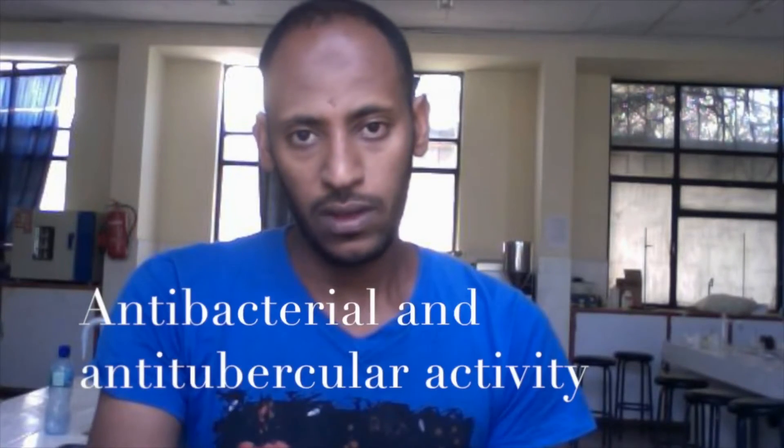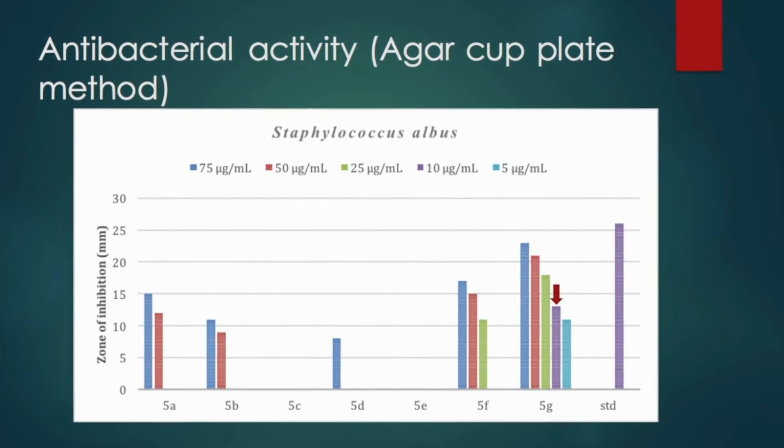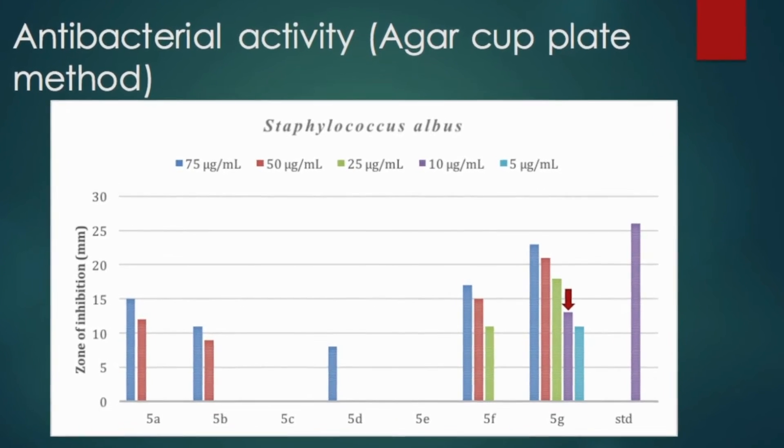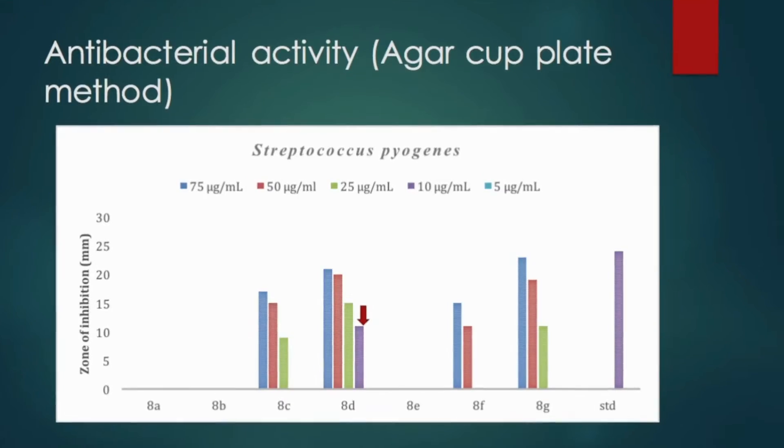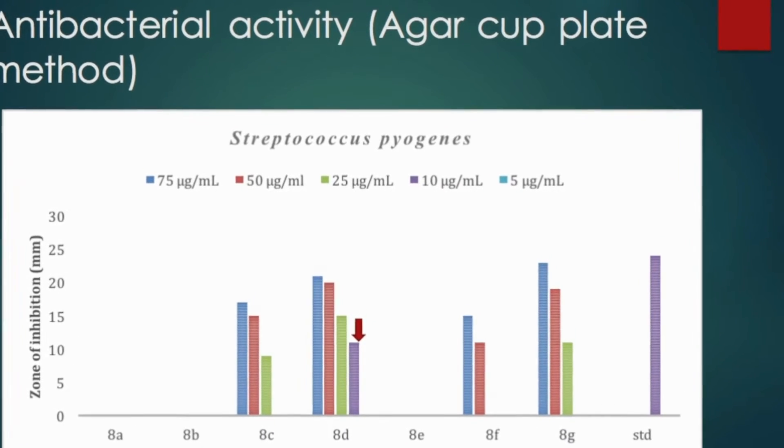The antibacterial activities of all synthesized compounds were investigated using agar diffusion methods. Accordingly, compound 5G and compound 8D were found to show significant activity against gram-positive bacteria. Structurally, this can be translated as the presence of N,N-dimethyl or 2,4-dinitrophenylhydrazine at position 3 of quinazolinone increasing activity against gram-positive bacteria.